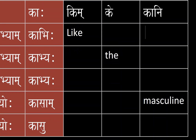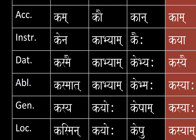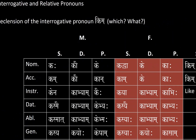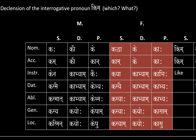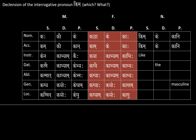The rest of the neuter declension is exactly like the masculine, from instrumental singular, dual, and plural going all the way down to locative singular, dual, and plural. There is no vocative declension for this word in Sanskrit. So with that, this is the declension of the interrogative pronoun kim, which means 'which' or 'what'. This is your Sanskrit instructor signing off with a namaste.